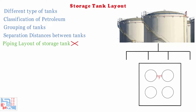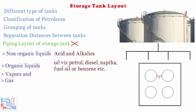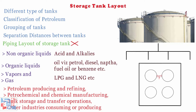The first question that comes to mind is: what do storage tanks contain? Storage tanks contain non-organic liquids like acid and alkalis, organic liquids like oil, petrol, diesel, naphtha, fuel oil, or benzene, and vapors and gases like LPG and LNG. Storage tanks can be found in many industries like petroleum producing and refining, petrochemical and chemical manufacturing, bulk storage and transfer operations, and other industries consuming or producing liquids and vapors.